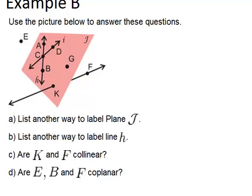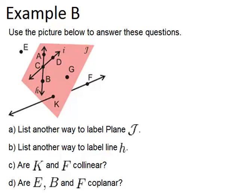Okay, example B. Use the picture below to answer these questions. And we see this sort of complicated picture where there's a plane. That's the pink thing, plane J. There's a line going through it. There's a couple of lines on the plane and some points outside.